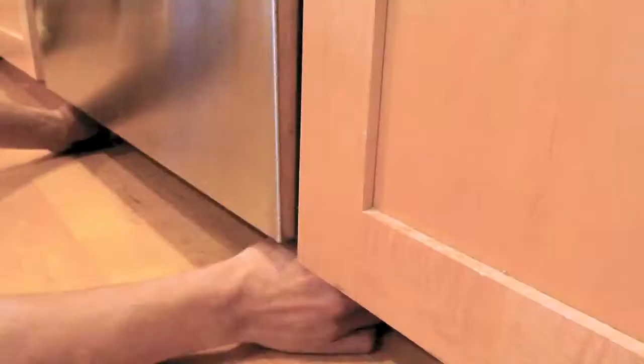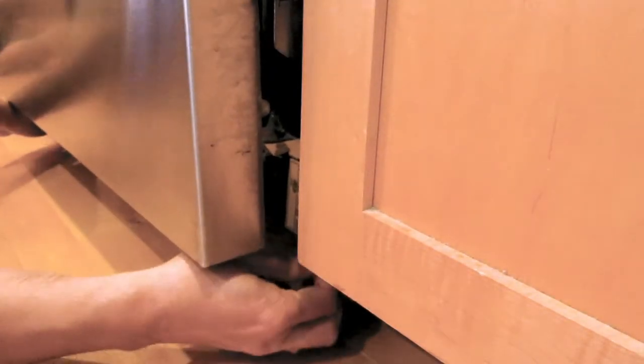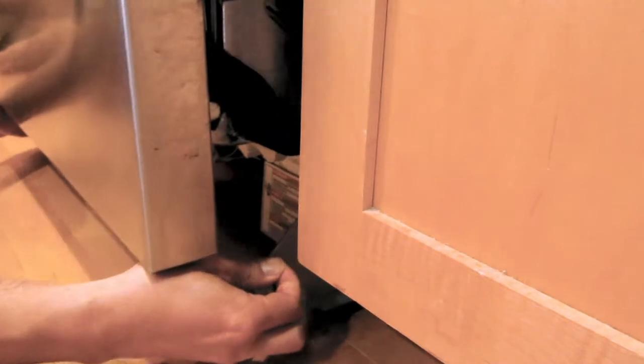After removing any mounting screws, just slide the dishwasher out slowly and watch out for plumbing and electrical connections underneath. There should be enough slack.